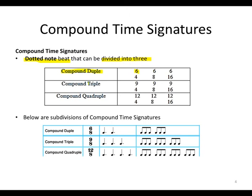In compound triple time, we have subdividing into three groups, where nine divided by three equals three. Same in compound quadruple time, where twelve divided by three will equal four.